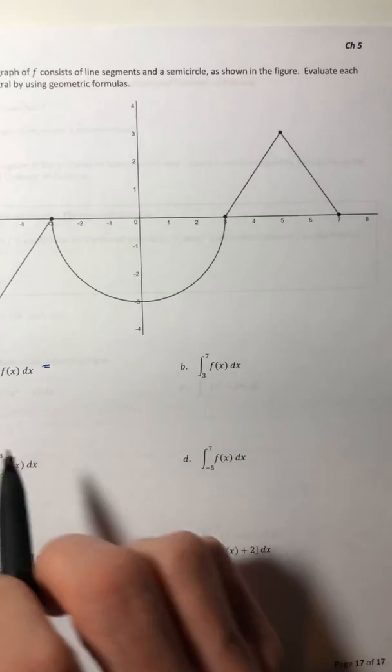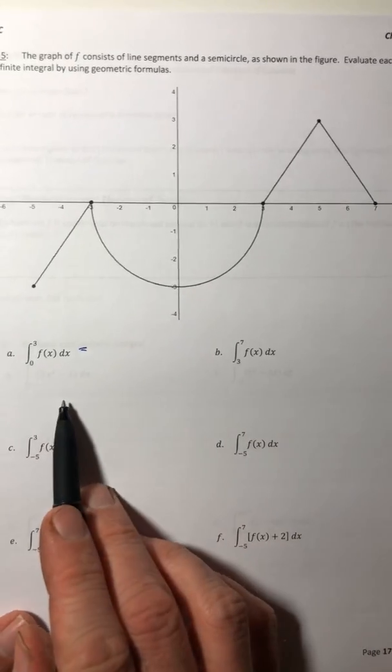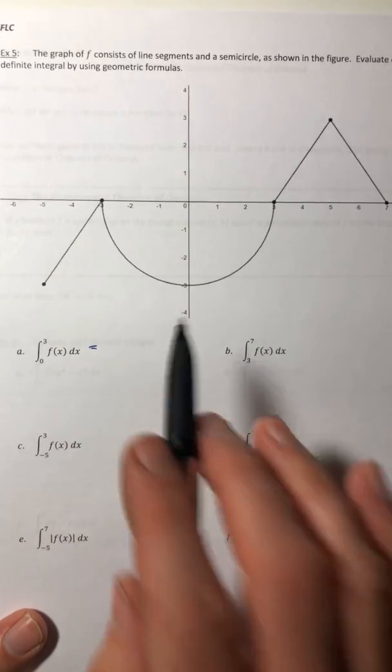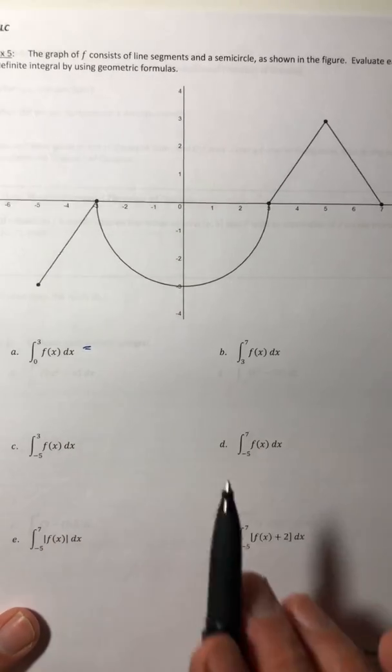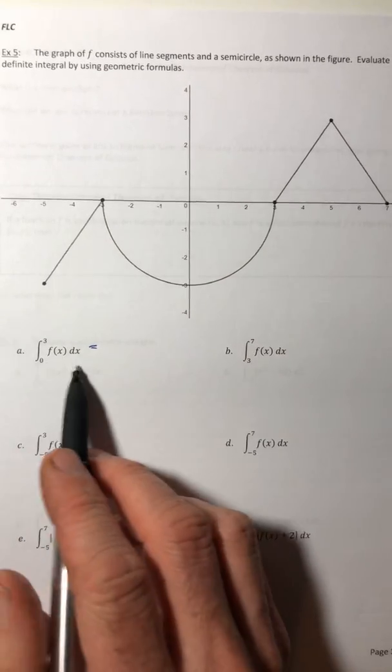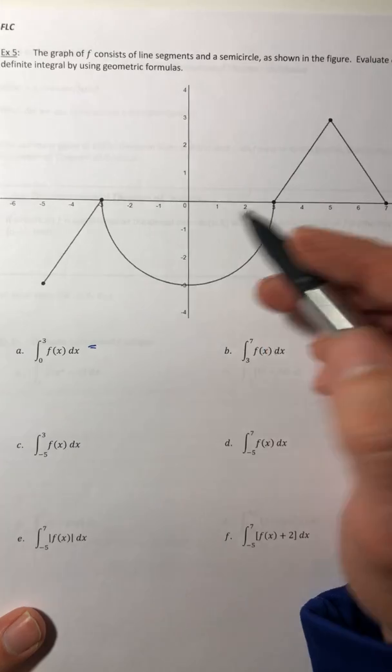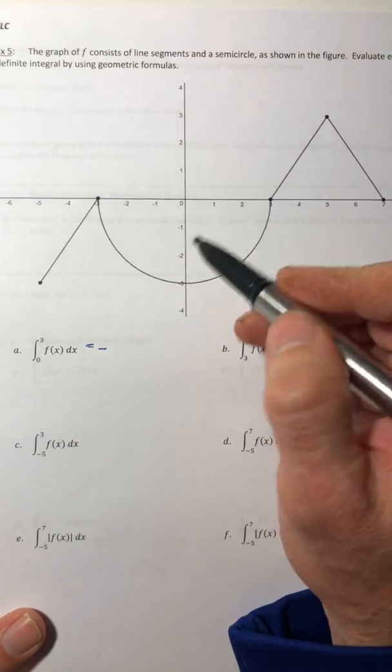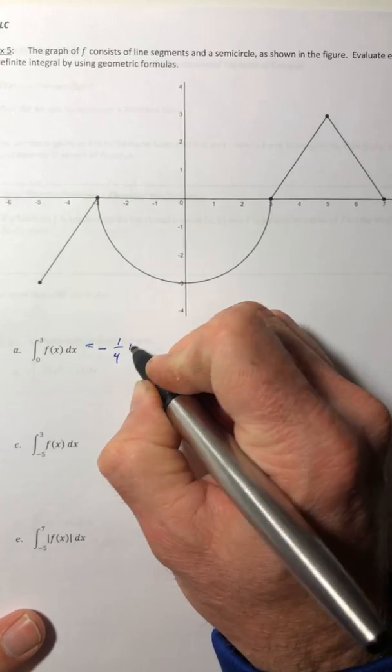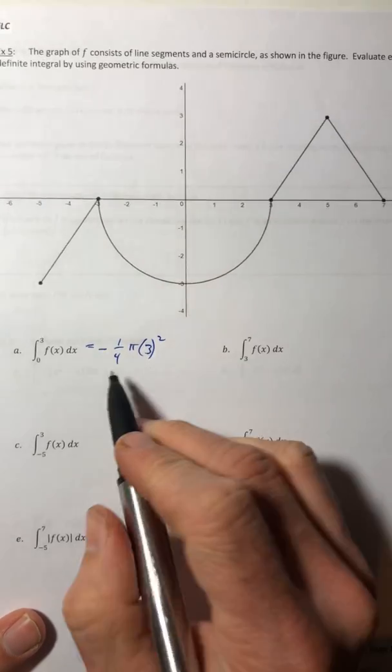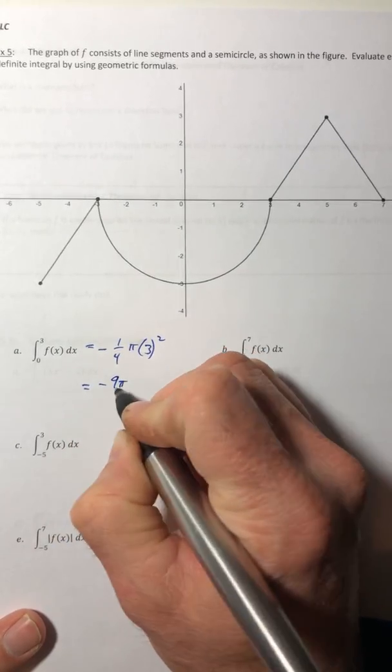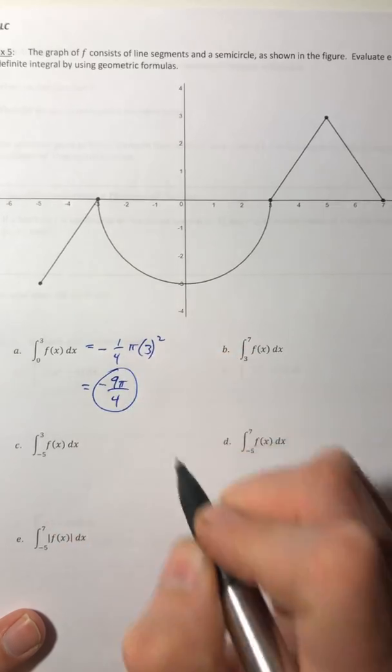So it didn't say find the area. It said get the definite integral. So the definite integral can be positive or negative. If it was area, area is always going to be positive. So if it's just the definite integral, it can be negative. So on this one, since it's underneath, it is going to be negative. So it's that quarter circle, so quarter of pi r squared, so negative 9 pi over 4.